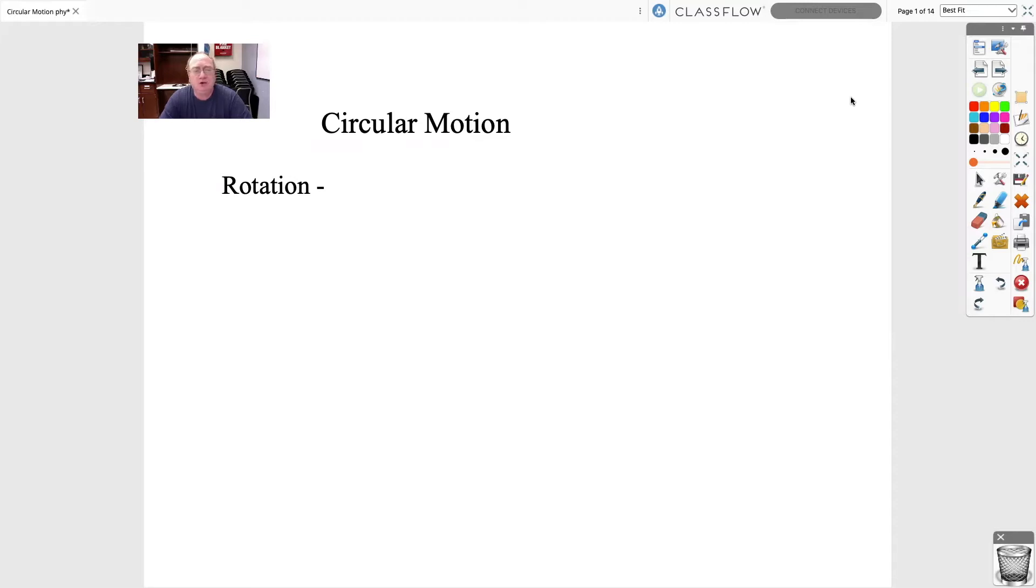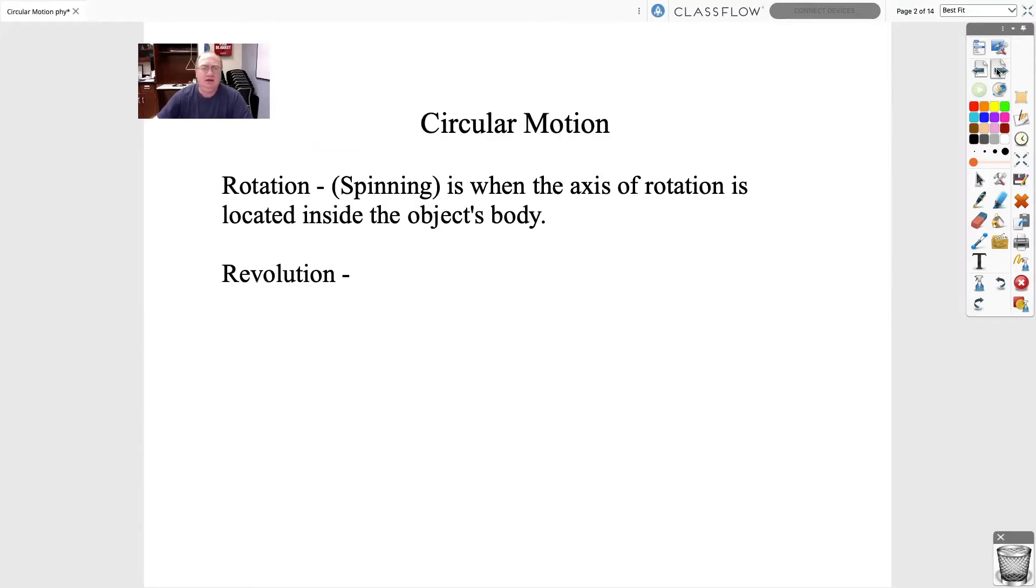One of them is rotation. If something's rotating, then you can substitute the word spinning in there, and that means the axis of rotation is actually inside the object. Another one we can do is revolution. In physics, revolution is not an armed conflict against the government. It's actually where the axis is outside the object.